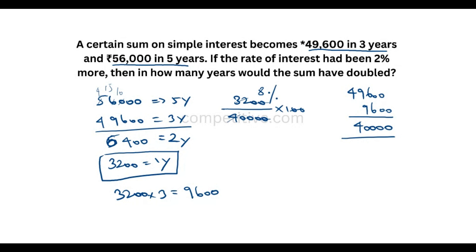The work starts from the basics. We know the rate is equal to 10%. However, we have to increase by 2%, making it 12%. We need to know the process for doubling, so we have to work with those two times.